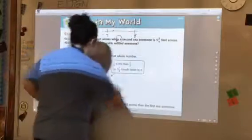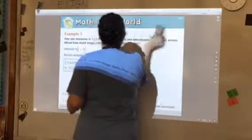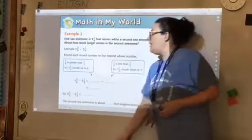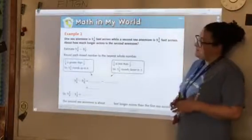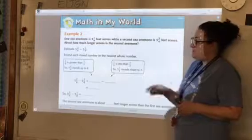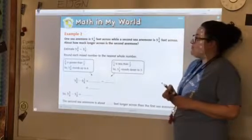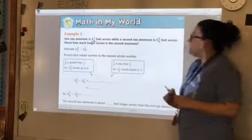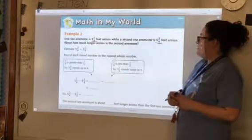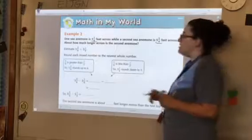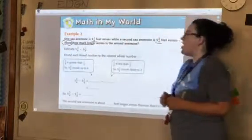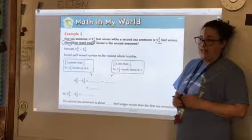Here is our next example. One sea anemone, and I got to meet these fellas. Sea anemone is three and one-fourth feet across. While a second sea anemone is five and three-fourths feet across. About, so we can't have that about. How much longer crosses the second sea anemone.